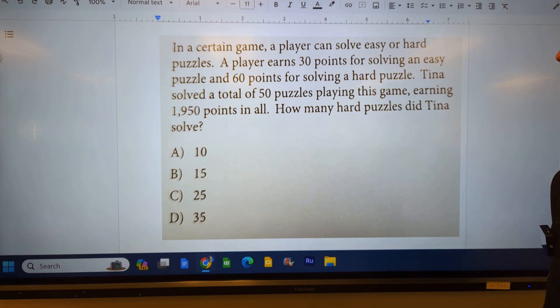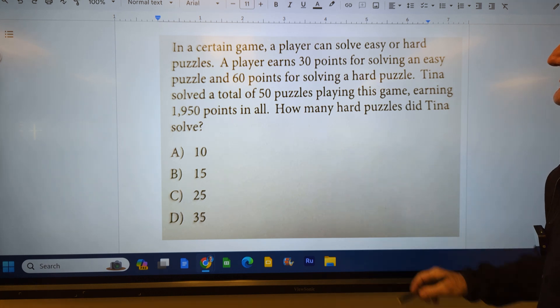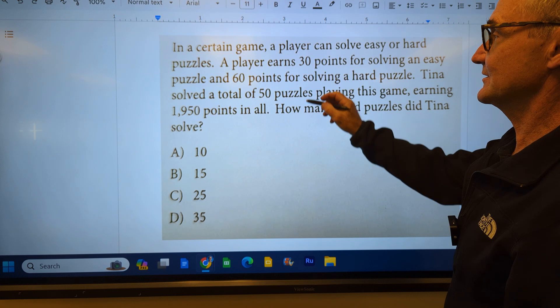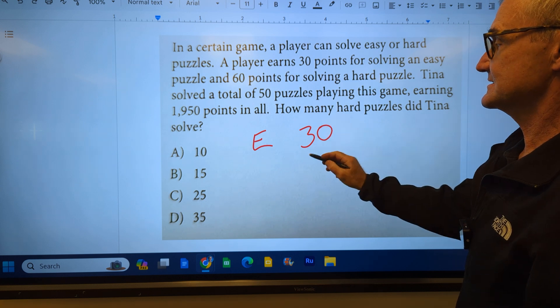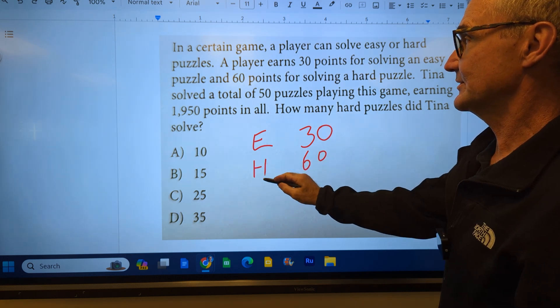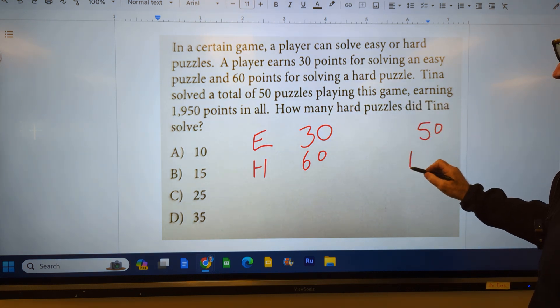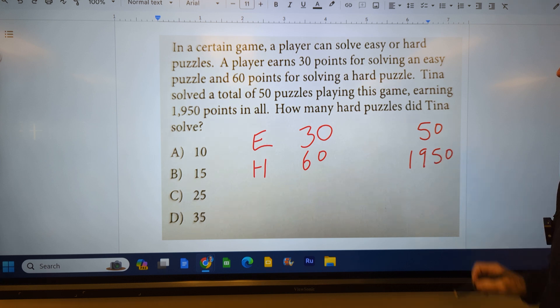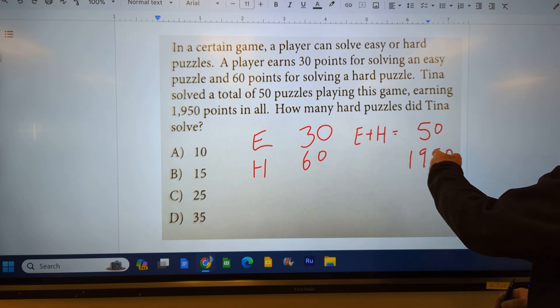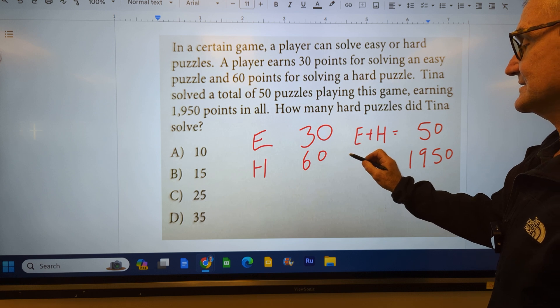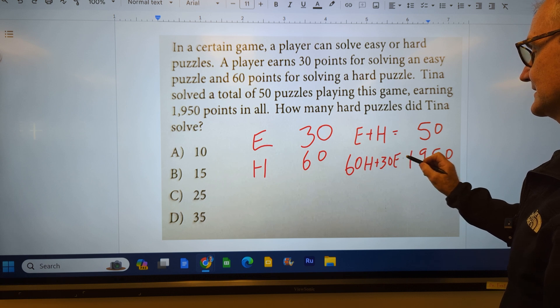Okay, here's a second problem. It's a word problem. Same thing. I'm going to read through this whole problem, transfer the paragraph into just math notation. A player can solve easy or hard puzzles. A player earns 30 points for solving an easy puzzle and 60 points for a hard puzzle. Tina solves a total of 50 puzzles earning 1,950 points. So I could see this is easy plus hard. The number of puzzles solved has to equal 50. And then the point value is 60 hard plus 30 easy equals that 1,950.